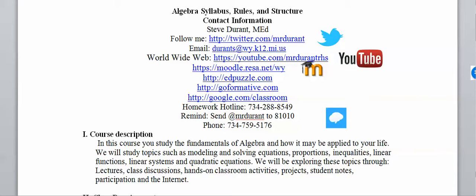The easiest way to contact me is via my email address, which is durants@wy.k12.mi.us. Another way to reach me is my school line, which is 734-759-5176. I check my email daily and I check my voicemail every day, and those are the best two methods to get a hold of me.